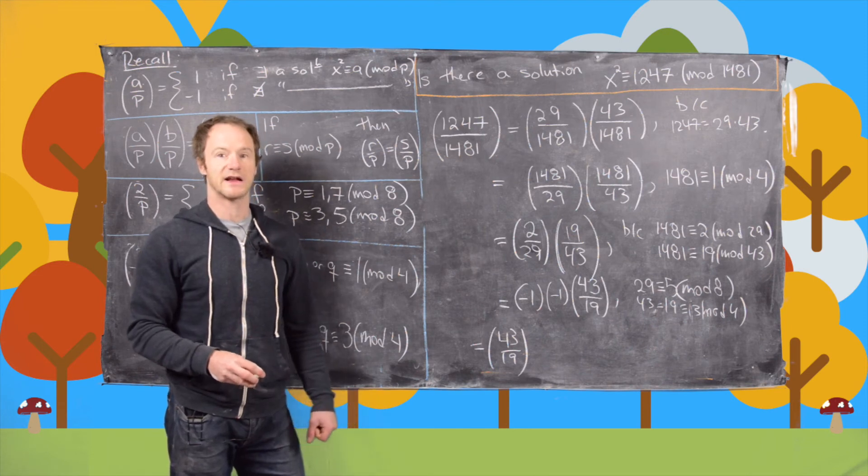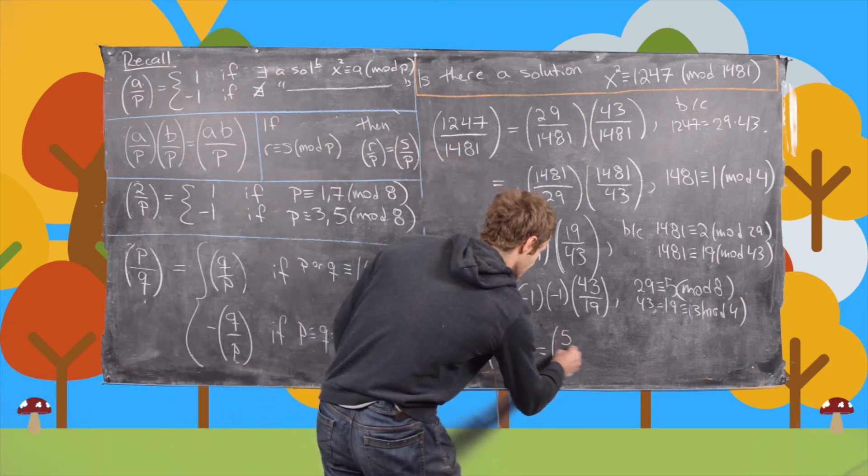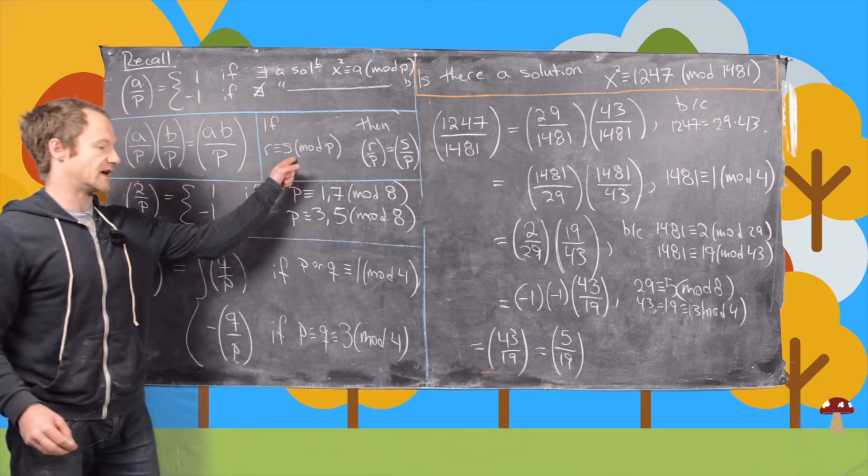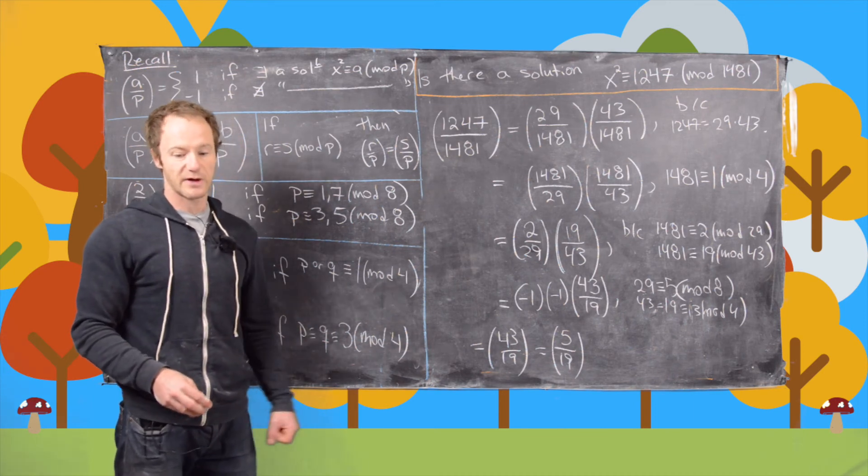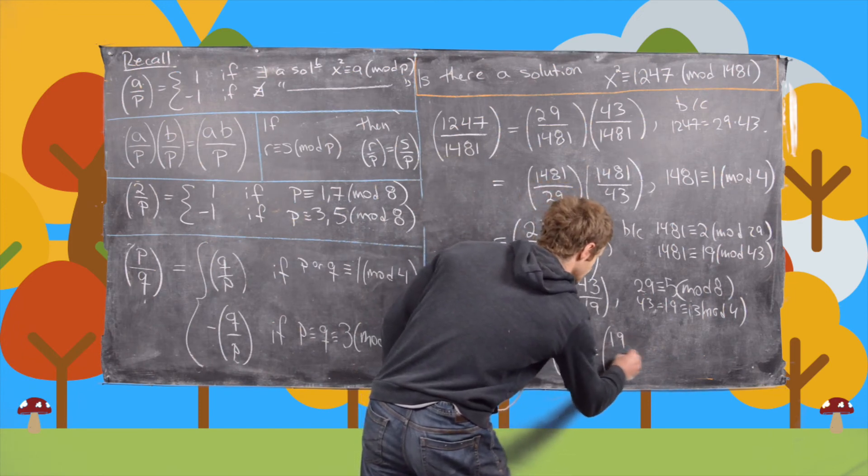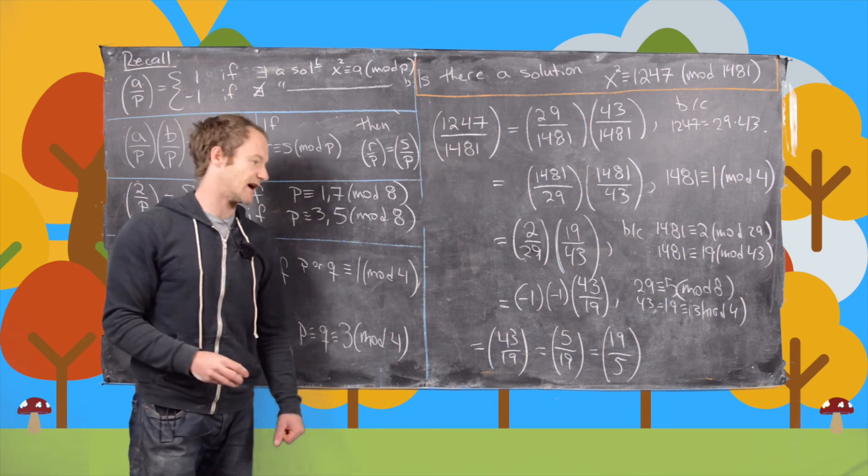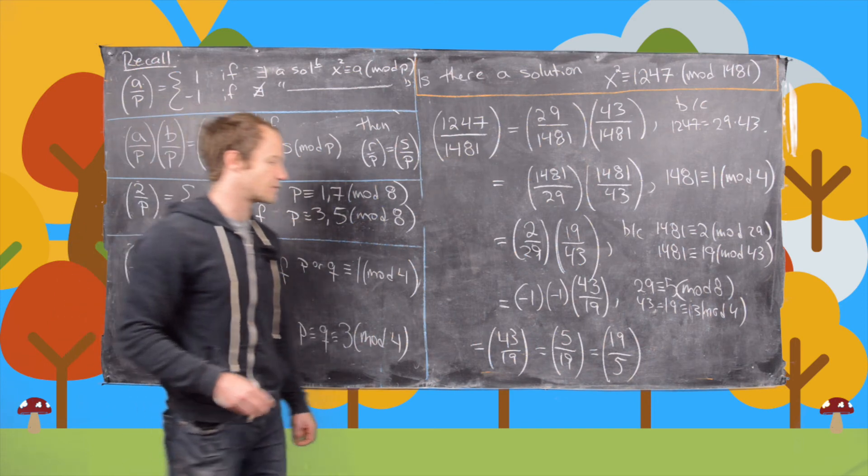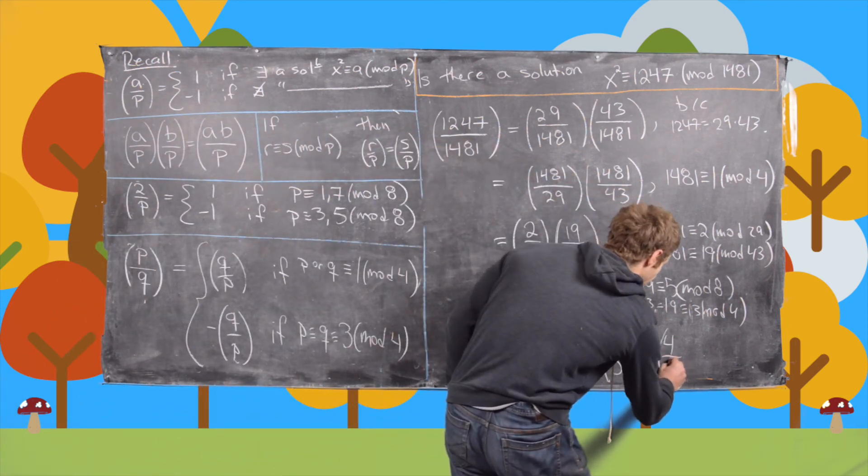Now we can reduce 43 by 19 as follows. So this is obviously 5 by 19. And here we've used this property again because 43 is congruent to 5 mod 19. And now we can flip this again. So notice this is 19 by 5. And we do not need a minus sign in this case because 5 is congruent to 1 mod 4. But now we can reduce this. And then this is equal to 4 by 5.